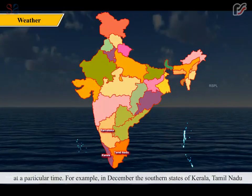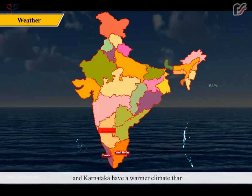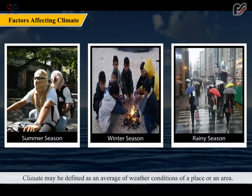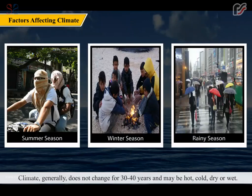For example, in December, the southern states of Kerala, Tamil Nadu and Karnataka have a warmer climate than the northern states of Uttar Pradesh, Uttarakhand and Kashmir. Climate may be defined as an average of weather conditions of a place or an area. Climate generally does not change for 30 to 40 years and may be hot, cold, dry or wet.